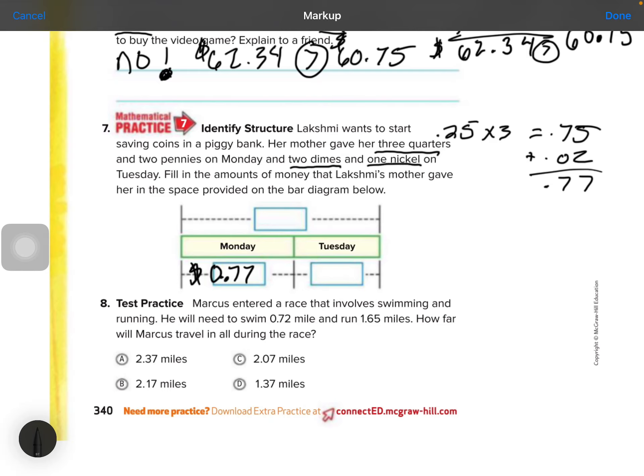And 2 dimes and 1 nickel on Tuesday. So 2 dimes, that's 10 cents times 2 equals 20 cents. And a nickel is 5. So bring down that 5, bring down the 2. So on Tuesday, we have $0.25.